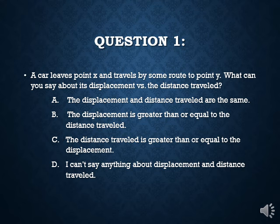Now a couple of questions to make sure your brain is clicking along with these 1D kinematics ideas. A car leaves point X and travels by some route to point Y — we have no idea how they got there, they didn't pay attention to Google Maps. They started at X and ended at Y. What can we say about its displacement versus the distance traveled?